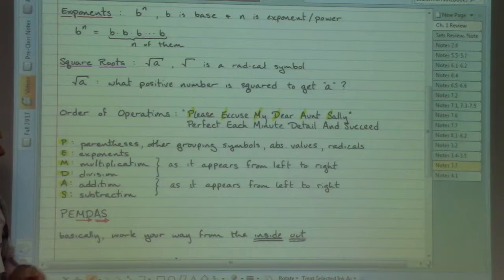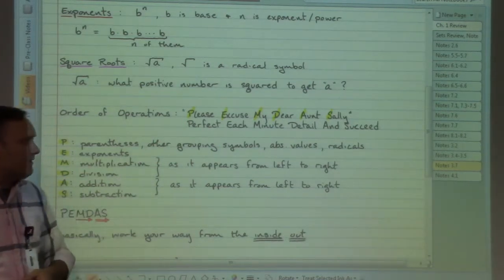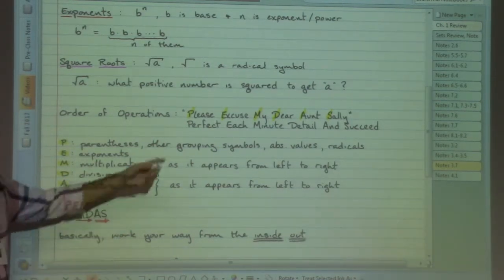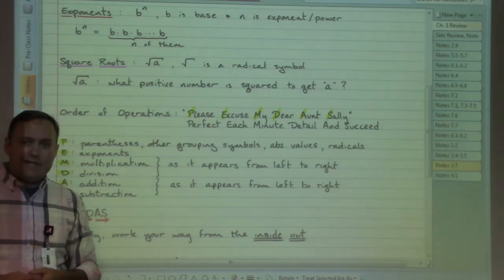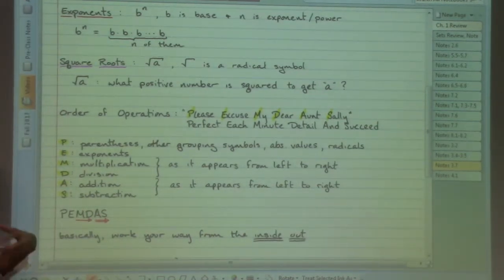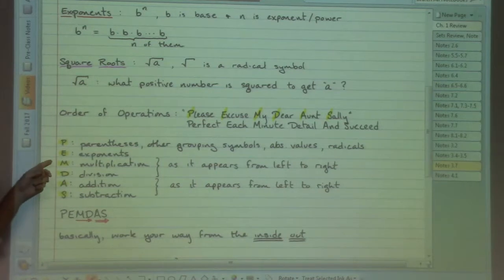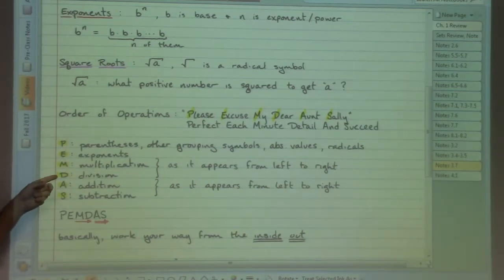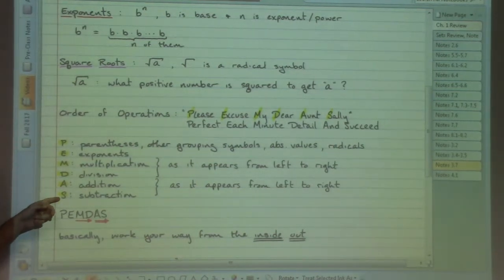Order of operations. A lot of people refer to that as please excuse my dear Aunt Sally. Another option, perfect every minute detail and succeed. But what these lack is a little something that we have with the multiplying and the dividing, and then afterwards with the adding and subtracting.